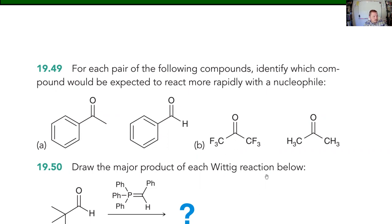So the ketone was less reactive because you had more alkyl groups donating electron density. If you have more halides pulling electron density, then you've got a bigger partial positive on your carbonyl, which means it's going to react faster. This follows the same logic as electron donating versus electron withdrawing — the same thing we talked about for aromatic substitution, where electron donating groups were ortho-para directors and electron withdrawing groups were meta directors.